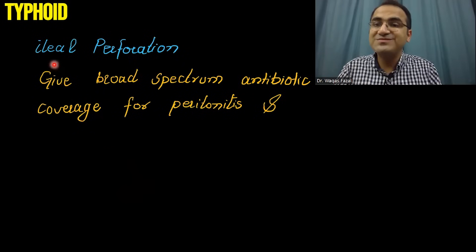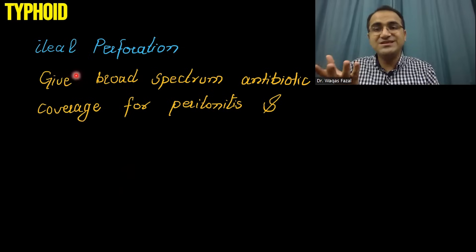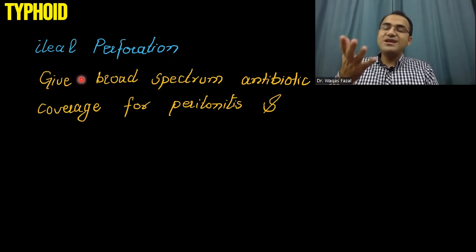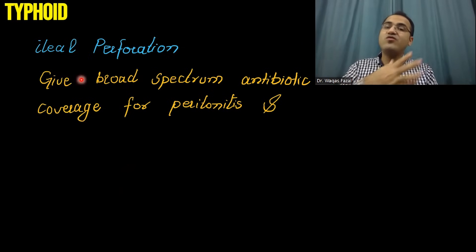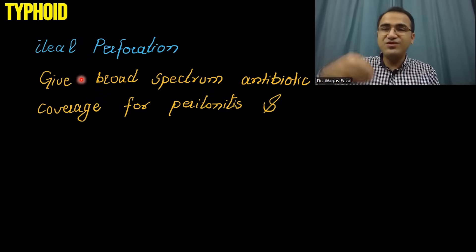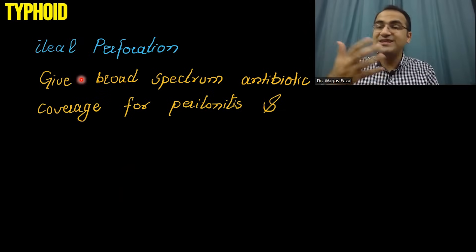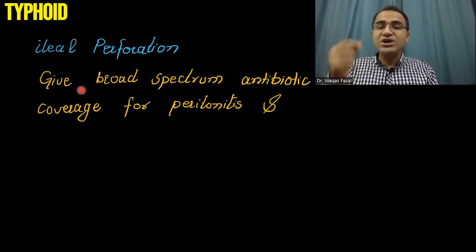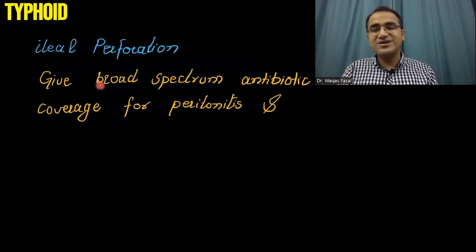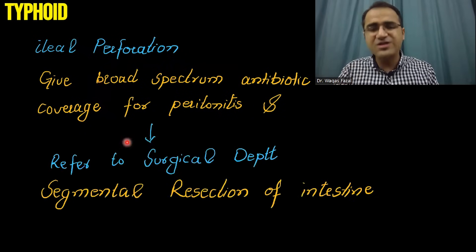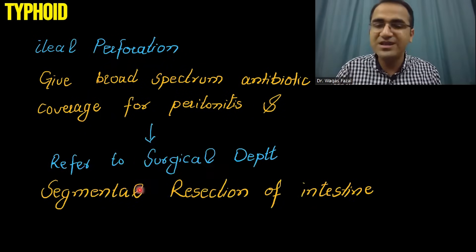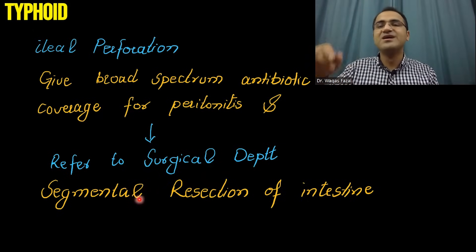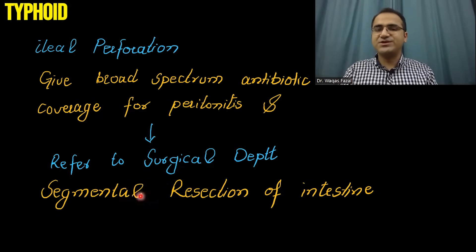In severe typhoid, ileal perforation can take place in the third week of infection. When ileal perforation occurs, there is spread of bacteria and feces into the abdominal cavity, resulting in peritonitis, abdominal tenderness, and abdominal guarding. Give broad-spectrum antibiotic coverage for peritonitis and refer the patient to the surgical department for surgical resection of the perforated part of the intestine.